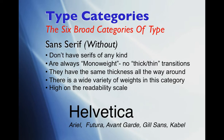Then we have the Sans Serifs. What that means, literally, is without serifs — you can see very clearly there are no little things at the top of the letters and no little feet on the letters. The sans serif fonts are typically always monoweight, meaning there's little or no thick and thin variations or transitions in the letters. They generally have the same thickness all the way around, and there is a wide variety of weights in this category.